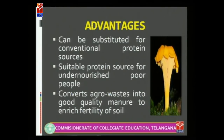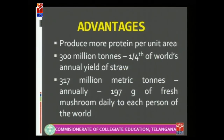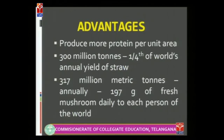Mushrooms convert agro-waste into good quality manure to enrich the fertility of soil. Using mushrooms we can produce more protein per unit area compared to agriculture or any other technology currently available. It is estimated that 300 million tons of mushrooms can be produced by using just one-fourth of the world's annual yield of straw. We can produce around 317 million metric tons of mushrooms annually, providing 197 grams of fresh mushroom daily to each person in the world.